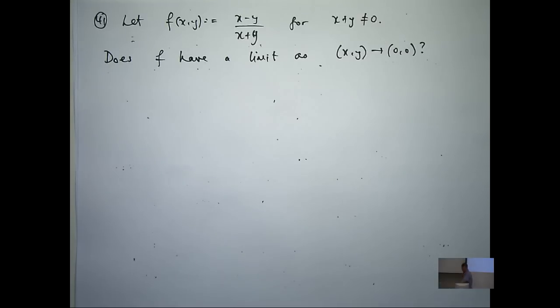So let's try to apply the two path test. What the two path test says is that if you approach the limit point along one path and another path, and you get two different answers, then the limit cannot exist. It's a bit like left hand limits and right hand limits from first year not being equal.